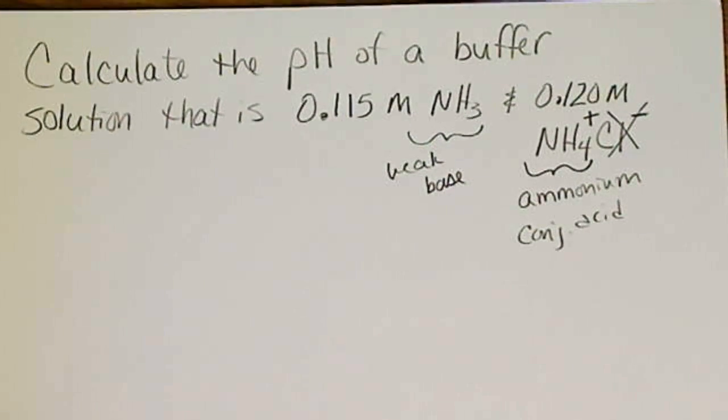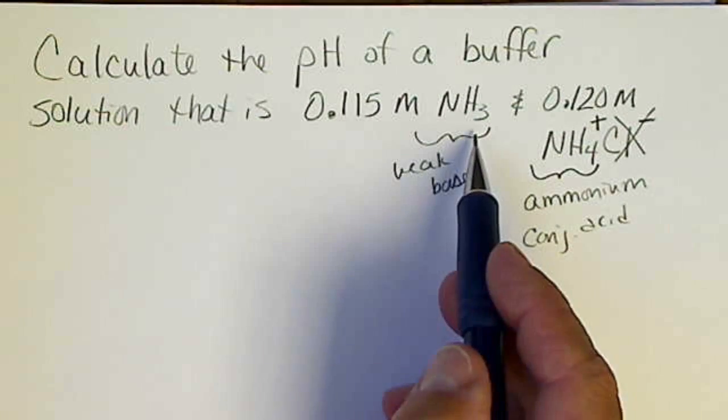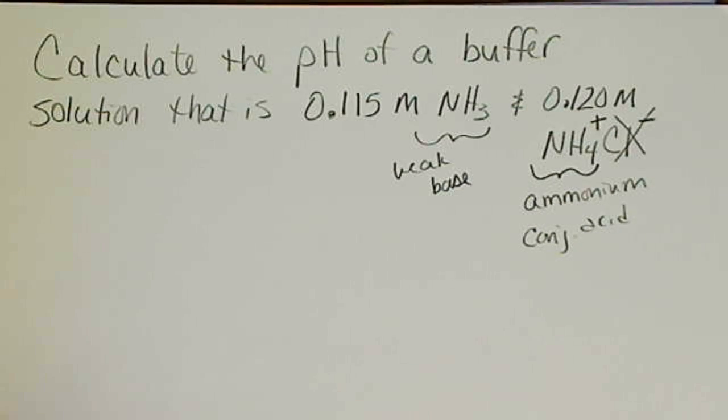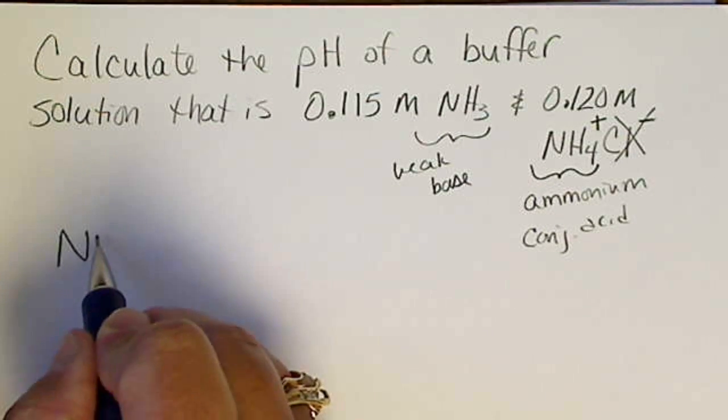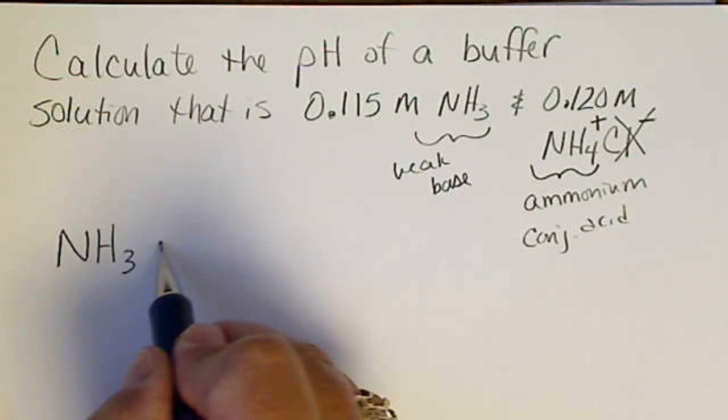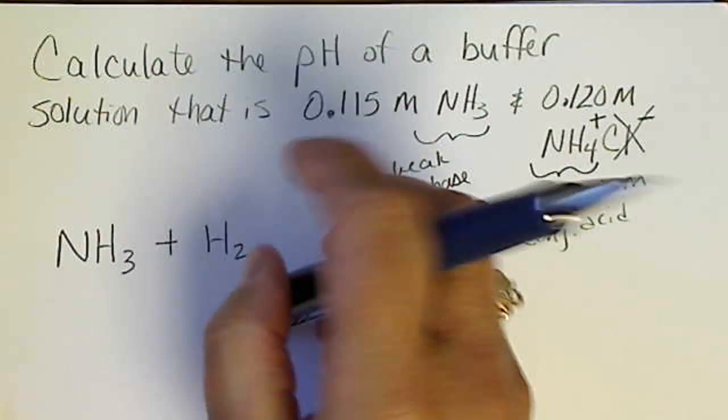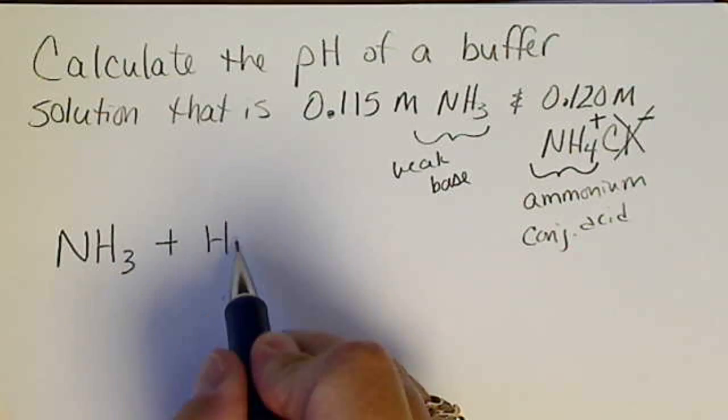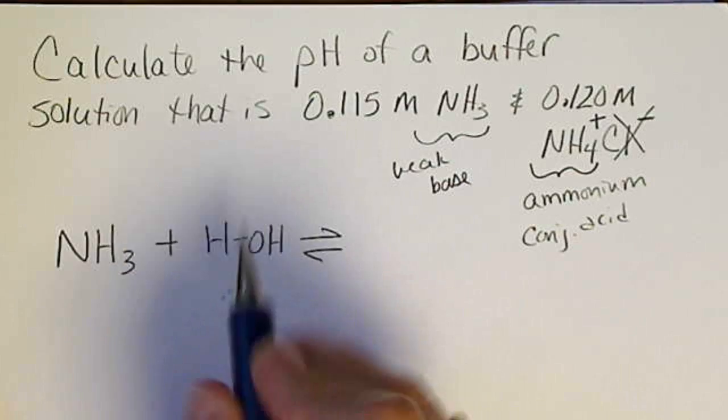So as usual, the dissociation of the weak acid or base governs the calculation. So if we write this, NH3, and with a base it's always best to show the water. We have, well I'll write it like HOH. So ammonia, the weak base, will react with water.